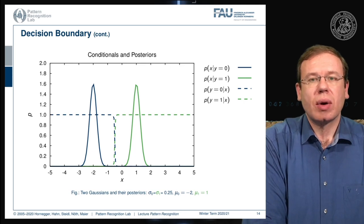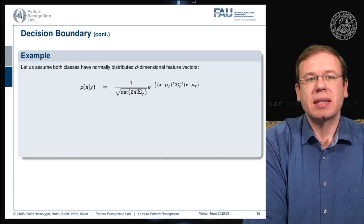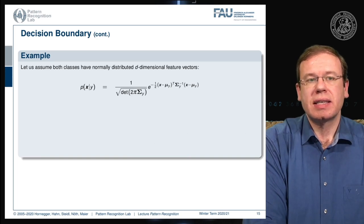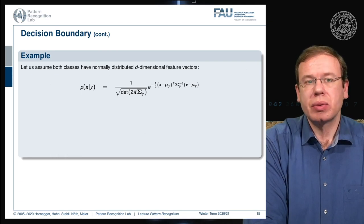Now let's look into an example where our example is a multivariate Gaussian given by this probability. We can see this is the standard formulation where we introduce a covariance matrix Σ and a mean vector μ.